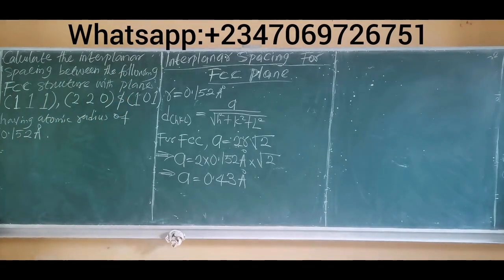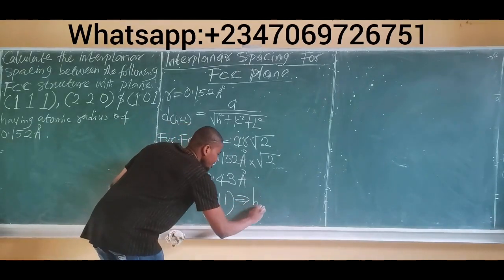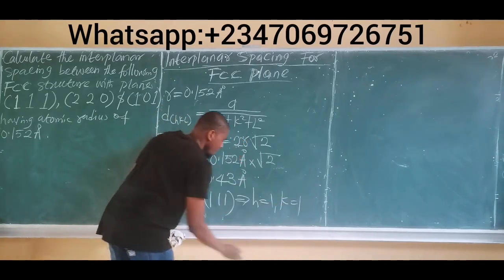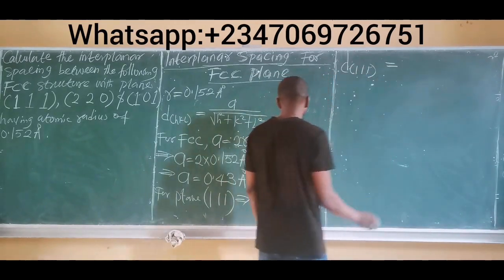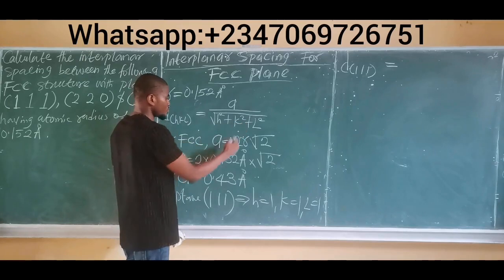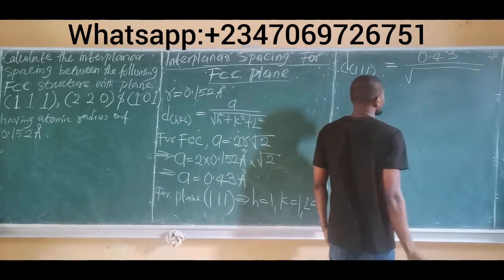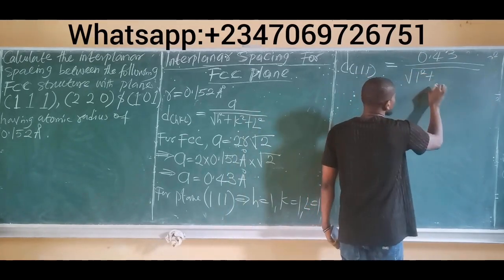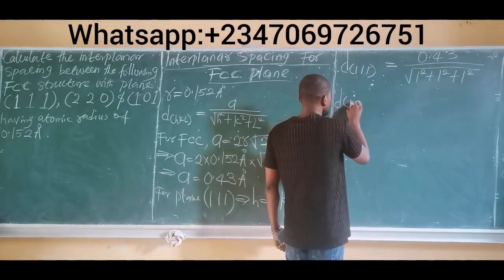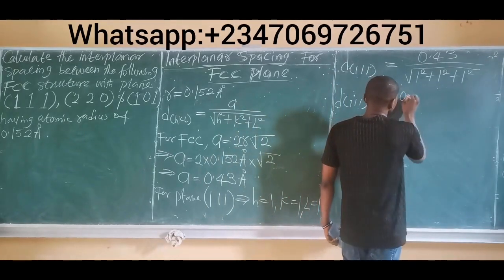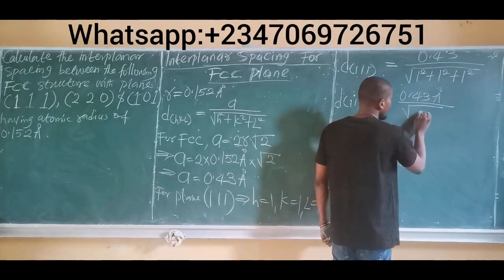Now let's consider each of the planes, starting with plane (1,1,1). For plane (1,1,1), this implies H = 1, K = 1, and L = 1. Therefore the interplanar spacing D(1,1,1) becomes the lattice constant divided by the square root. The lattice constant is 0.43, so we have 0.43 all over the square root of 1² + 1² + 1², which gives us the square root of 3.